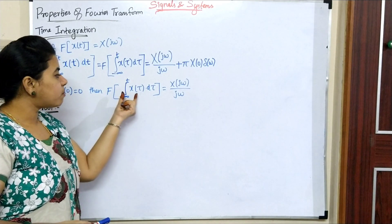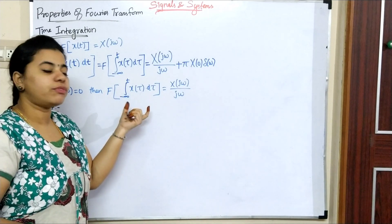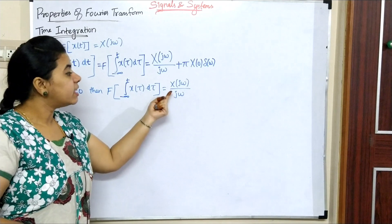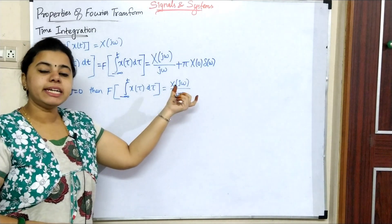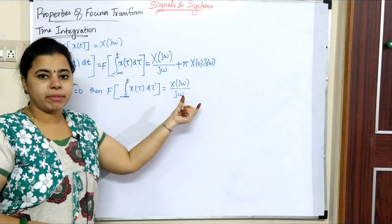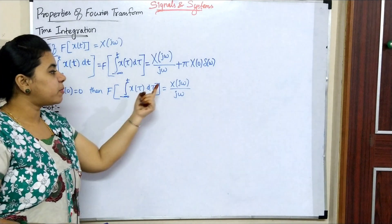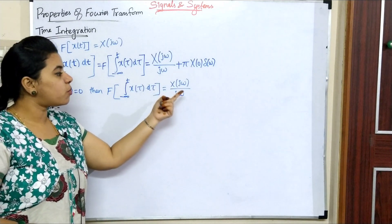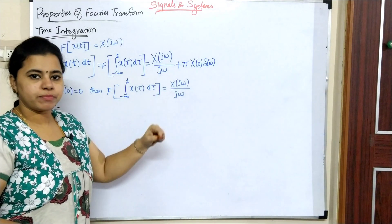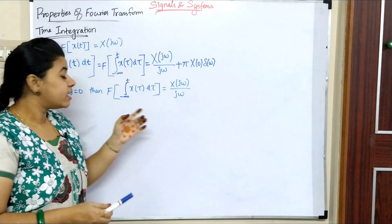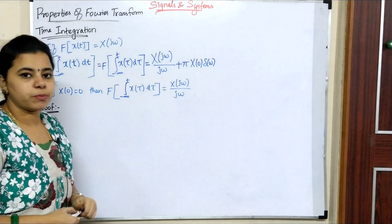The Fourier transform of the differentiation of x(t) equals X(jω)·jω. So here, for integration, we get X(jω)/jω. This applies when x(0) equals zero.